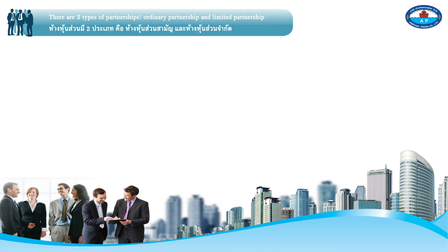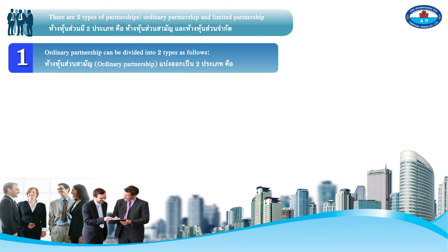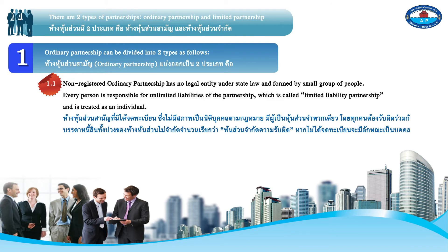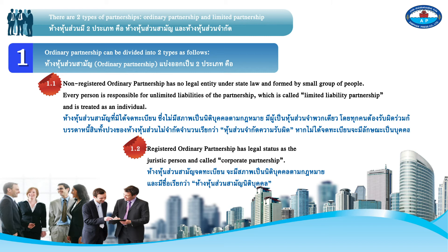There are two types of partnerships: ordinary partnership and limited partnership. Ordinary partnership can be divided into two types: 1.1 non-registered ordinary partnership, which has no legal entity under state law and is formed by a small group of people where every person is responsible for unlimited liabilities, and is treated as an individual.